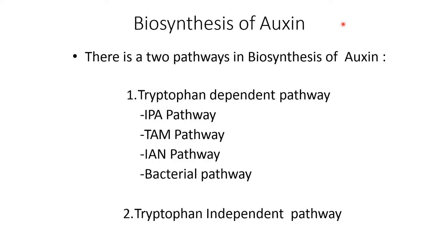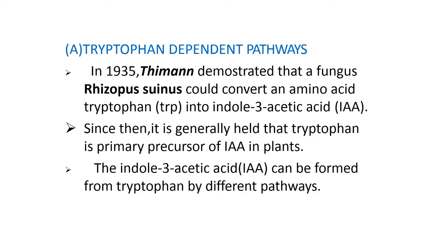Biosynthesis of auxin: there are two pathways — one is the tryptophan-dependent pathway and another one is the tryptophan-independent pathway. In the case of the tryptophan-dependent pathway, it is further divided into four types: IPA pathway, TAM pathway, IAN pathway, and bacterial pathway.